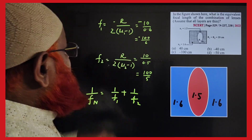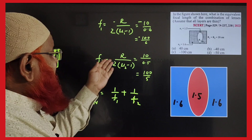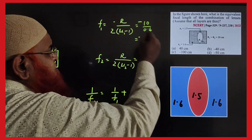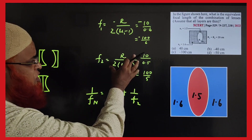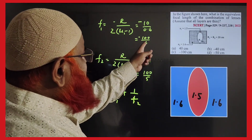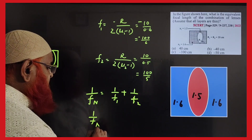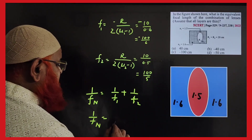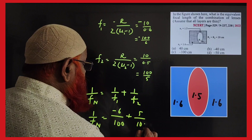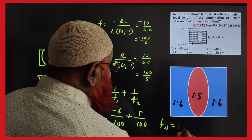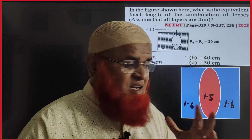The shortcut formula for the concave lens is -r / (2(μ - 1)), and for the convex lens it is +r / (2(μ - 1)) — same formula but concave is negative and convex is positive. After substituting the values you get 100/6 and 100/5. The net focal length formula gives 1/f_net = -6/100 + 5/100, so the net focal length is -100. Option C is the answer.